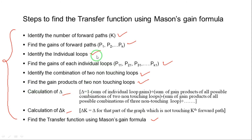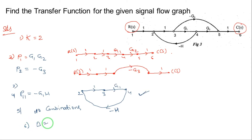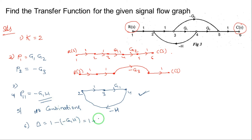Now move to step six: calculation of delta. Delta = 1 minus the sum of individual loop gains. There is one loop with gain −g1h. Since there are no non-touching loops, those terms are zero. So delta = 1 − (−g1h) = 1 + g1h. That is the final value of delta.